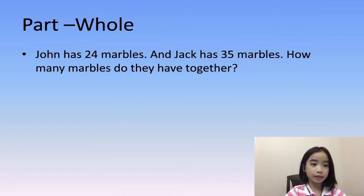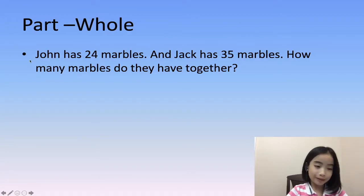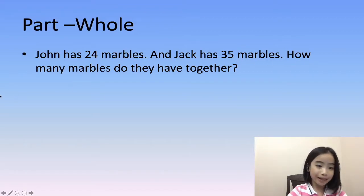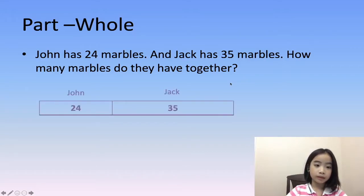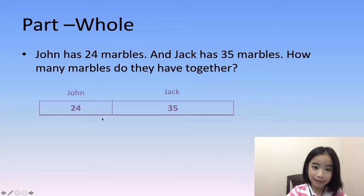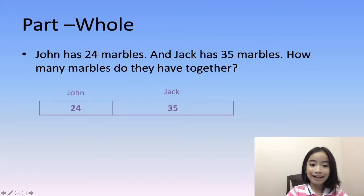The first type is called part-whole. The word problem is: John has 24 marbles and Jack has 35 marbles. How many marbles do they have together? We can use a bar to illustrate this question. John has 24 marbles and Jack has 35 marbles, and we need to find out how many marbles they have together.